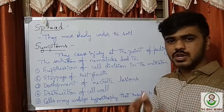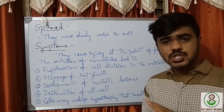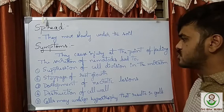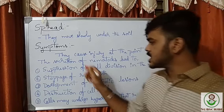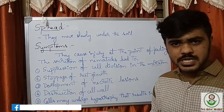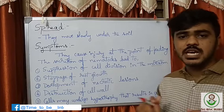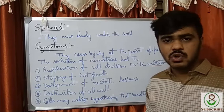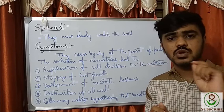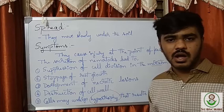Before seeing the symptoms, let's see the effects of the secretions of nematodes in the plant. When nematodes approach a plant, they cause damage or injury at the site of feeding. The secretions lead to suppression of cell division in the meristematic cells, stoppage of root growth, and development of necrotic lesions — meaning death of those cells. Then complete destruction of the cell wall occurs. The cells exhibit hypertrophy and form galls; we can observe root galls where this hypertrophy forms.